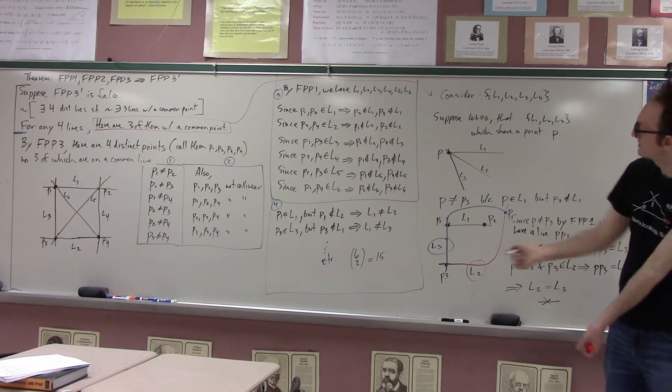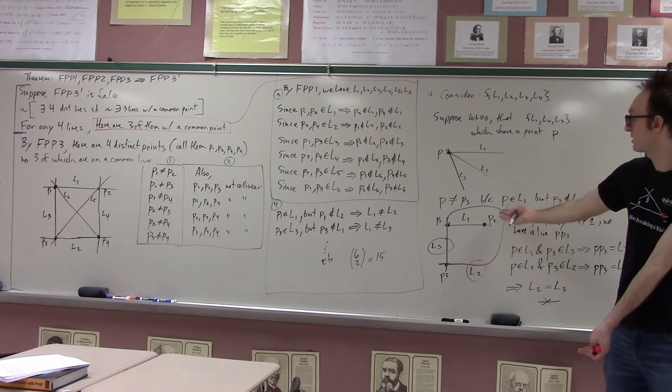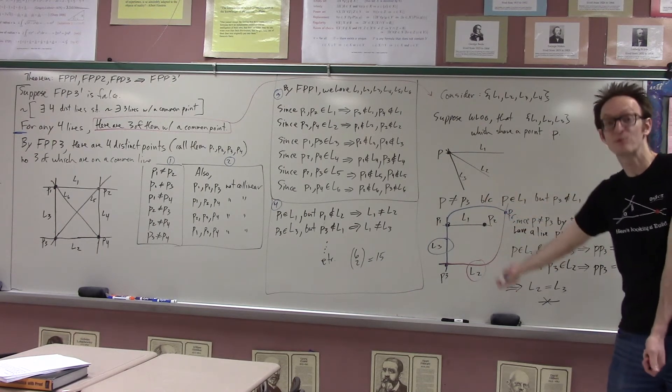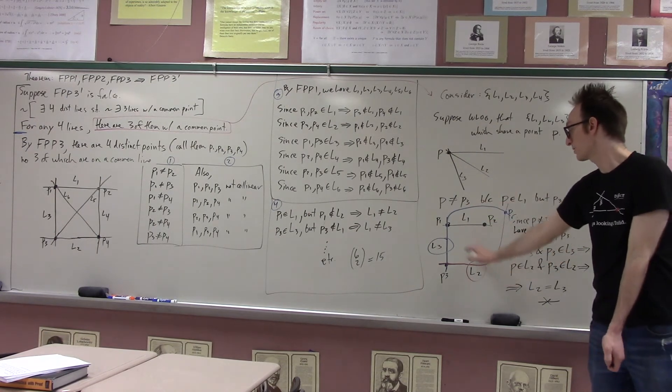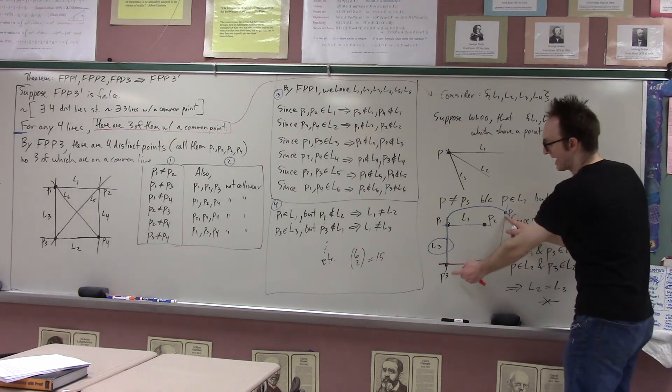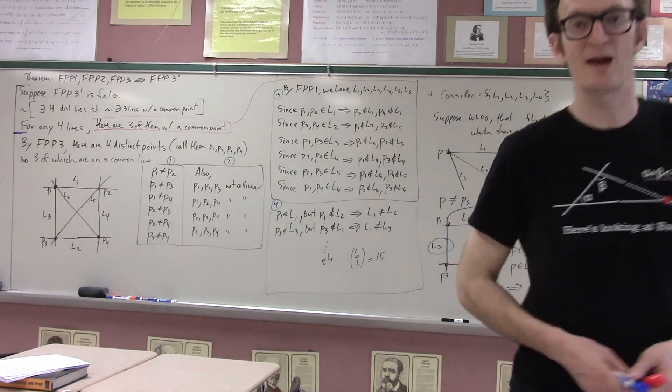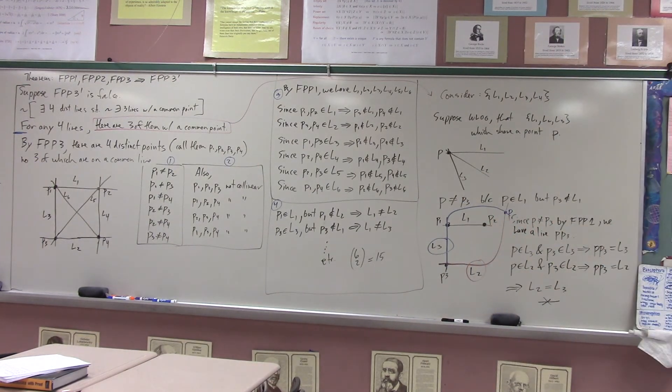If P is on L1, L2, and L3, then in particular P is on L2 and L3. If P is not P3, then the visual contradiction here is that we have two distinct lines, two lines we've already proved to be distinct, L2 and L3, which intersect at two distinct points. And that is impossible. That was a lot of talking for ultimately like two additional minutes of mathematical arguments, but perhaps that will help some people, especially those who missed the entire lecture. Goodbye, class!